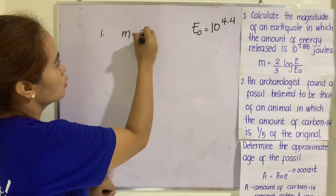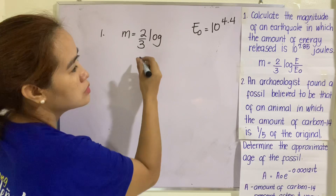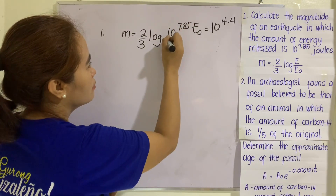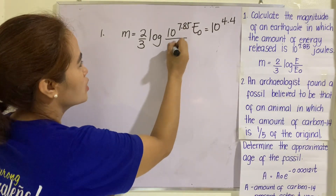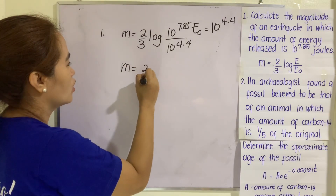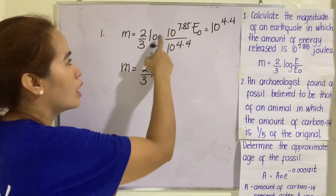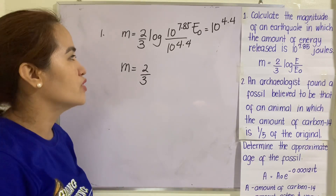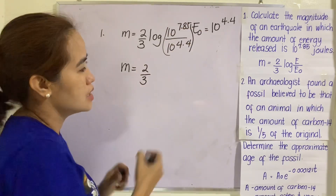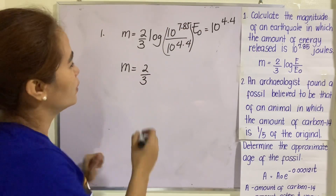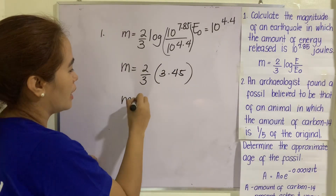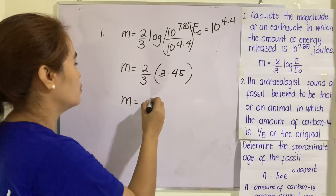M equals (2/3) log of (10 raised to 7.85 divided by 10 raised to 4.4). Taking the logarithm of that quotient gives 3.45. Multiplying by 2 and dividing by 3, the magnitude of the earthquake is 2.3.